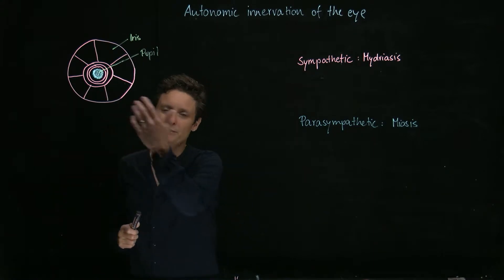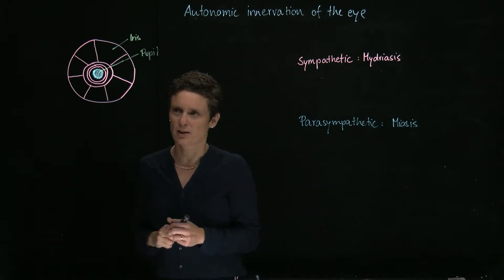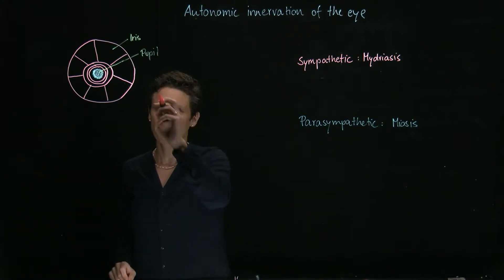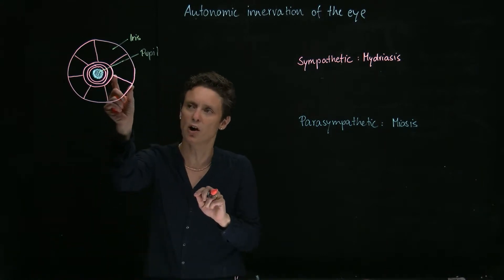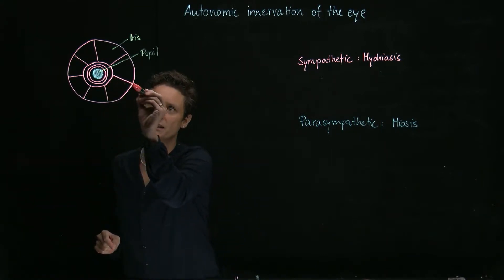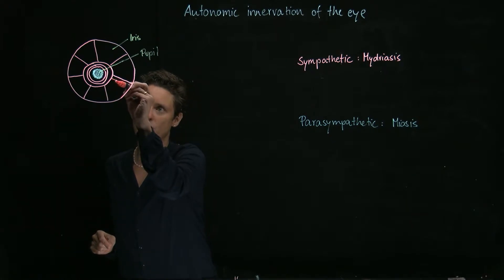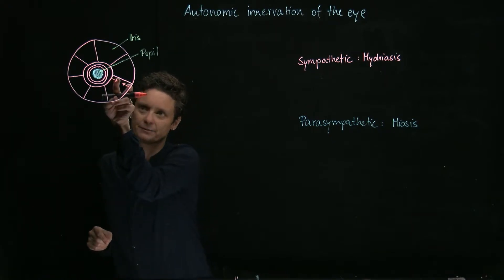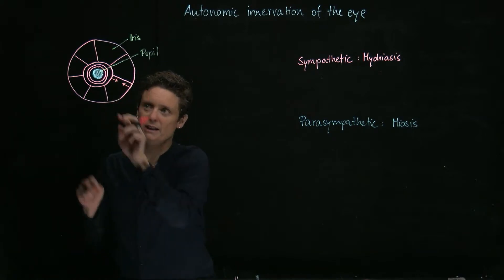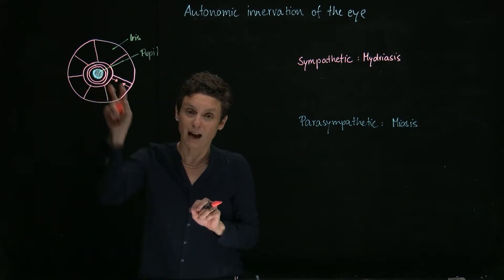Now, if we want to mediate mydriasis, pupillary dilation, that could happen if this radial smooth muscle actually contracts. Imagine this radial smooth muscle contracts. We're going to bring in this muscle, have it a little bit smaller in here, so the pupil is going to be pulled out.